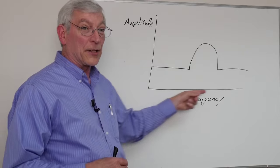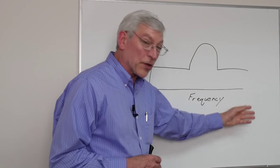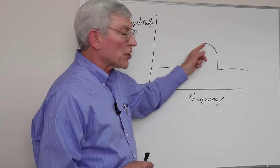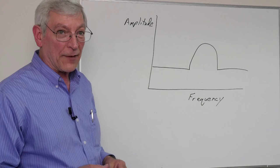This is part of a spectrum analyzer display. We've got amplitude on the vertical axis, frequency on the horizontal axis, and I happen to be showing channel 6 in the middle of the Wi-Fi or 802.11 spectrum.